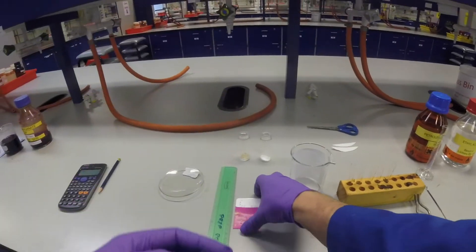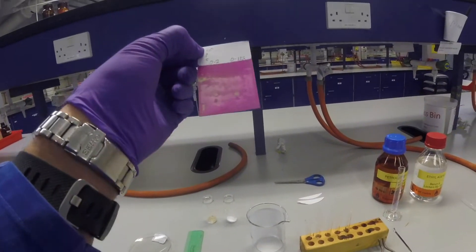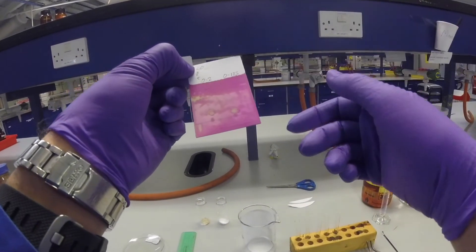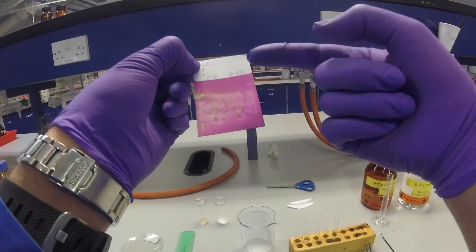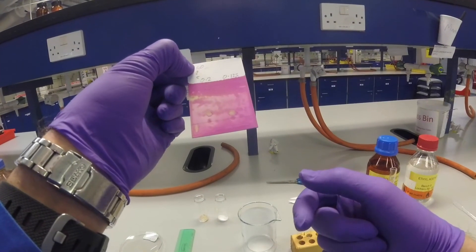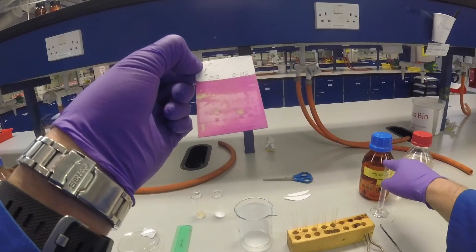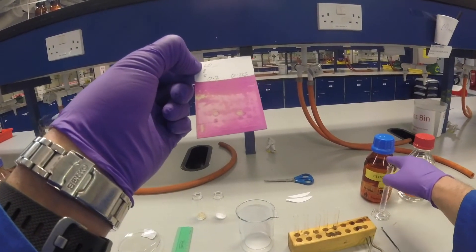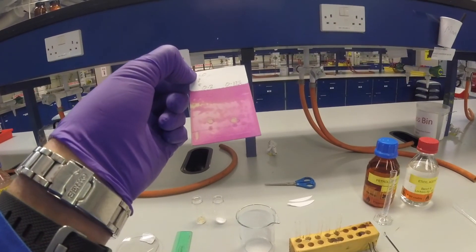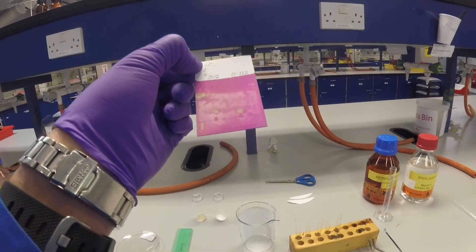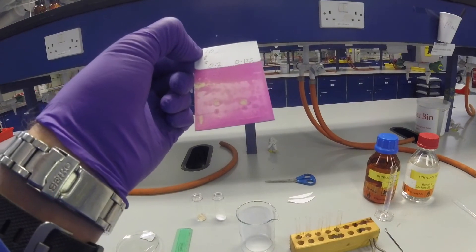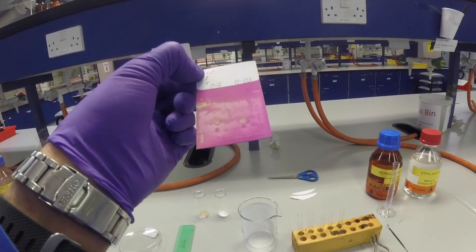In your lab book, the important thing to do is draw out a sketch of your TLC plate, say what the retention factor is for each of those spots, say which solvent system you used—in this case 50-50 ethyl acetate petrol—and also say what visualization technique you've used in order to visualize your spots and see where they are. So hopefully that will help you with TLC.